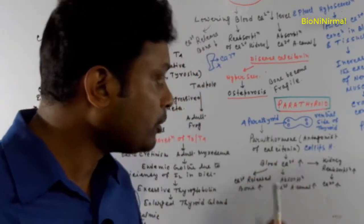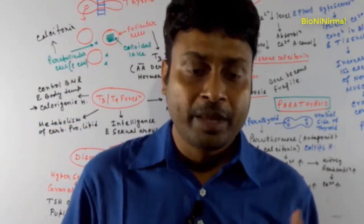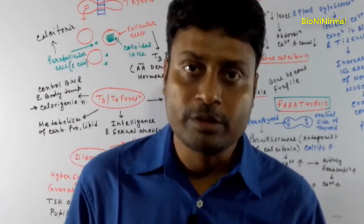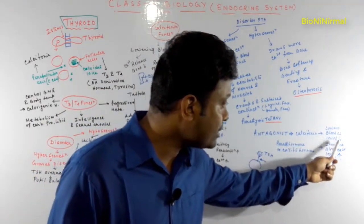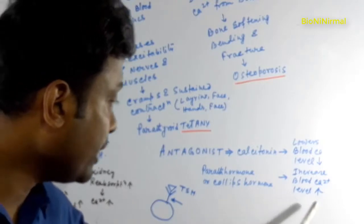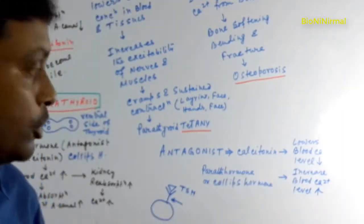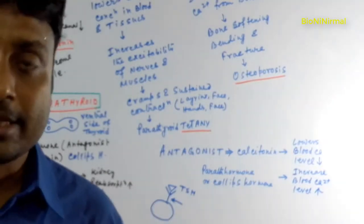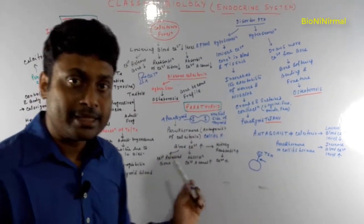Parathormone is actually the antagonist of calcitonin. Antagonists are hormones that function in an opposite manner. Calcitonin lowers the blood calcium level, but parathormone increases the blood calcium level — so their functions are opposite. Therefore, calcitonin and parathormone are called antagonist hormones.